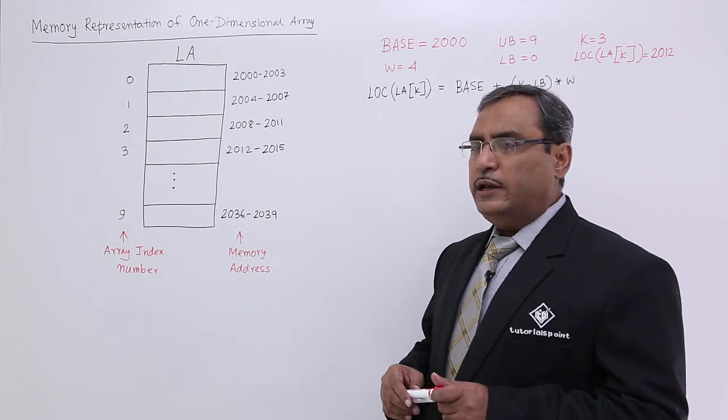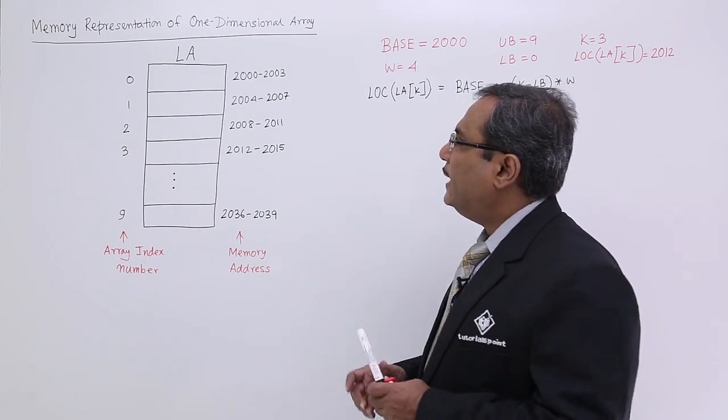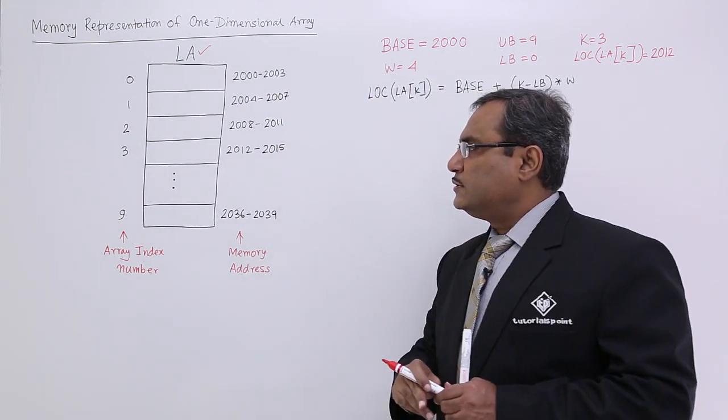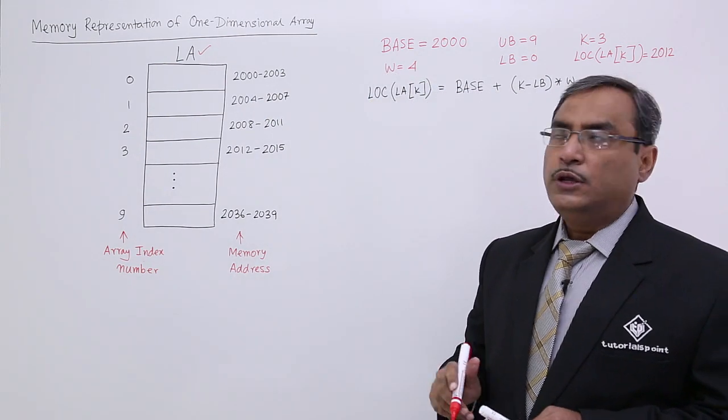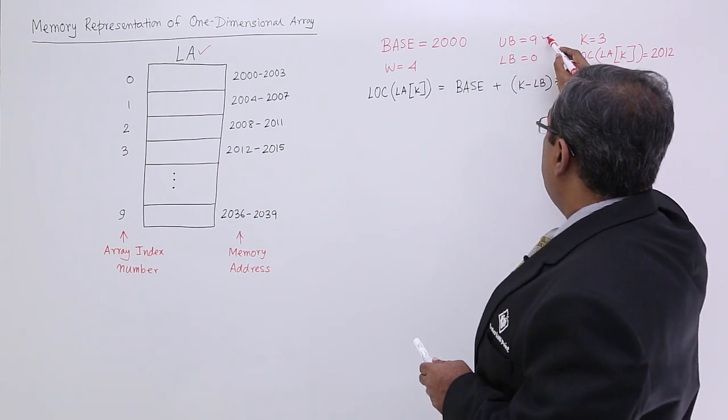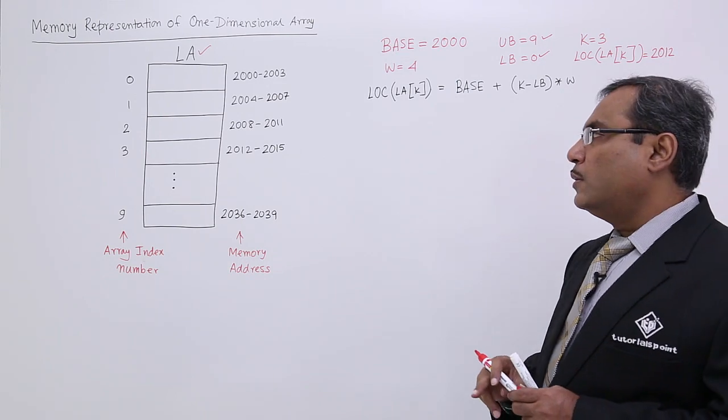Let us suppose there is one linear array. The name of the array is LA. It is having ranges from 0 to 9. Here the upper bound is equal to 9 and the lower bound is equal to 0.